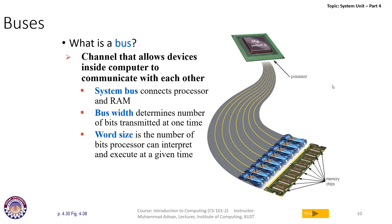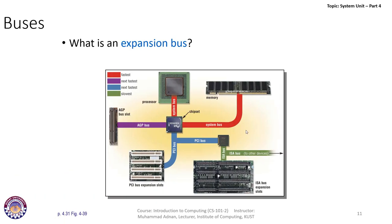Word size is the number of bits a processor can interpret and execute at a given time. The more powerful the processor, the more bits it can interpret and execute. The wider the bus width, the more data we can provide to the CPU. If you have a narrow bus width it will decrease the performance of your computer system, because even if your processor is very fast you are not providing enough data to it. The Intel Pentium 4 processor is connected to RAM through the system bus, and data travels in parallel inside this system bus.